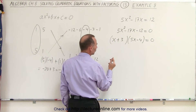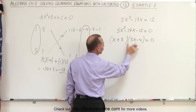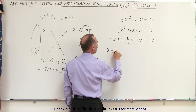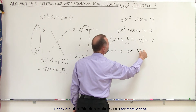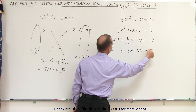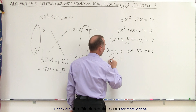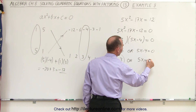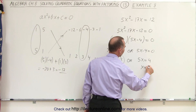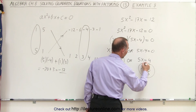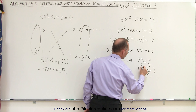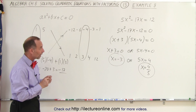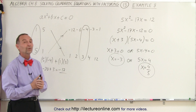That's the proper factored form, which means that since we multiply two binomials together and get 0, either x plus 3 must equal 0, or 5x minus 4 must equal 0. That means x must equal negative 3 as one possibility, or when we move the 4 across we get 5x equals 4, or x equals 4 divided by 5 as the second solution. Those are the two solutions to our quadratic equation, and that is how we solve it.